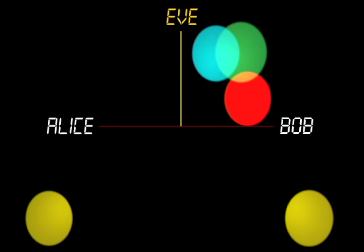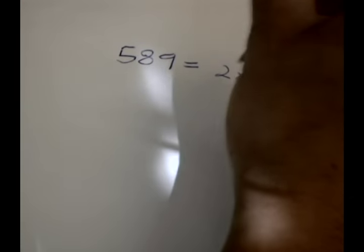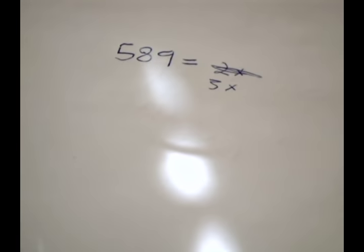Notice Eve has no easy way to find Bob's yellow, since she needs Alice's private red to do so. This is how it should work. However, a mathematical solution was needed to make this work in practice.